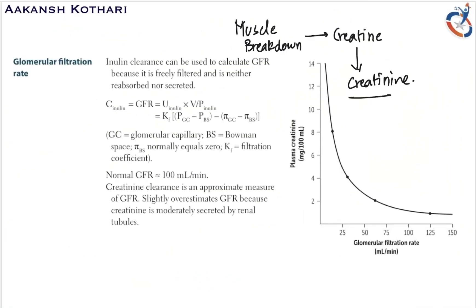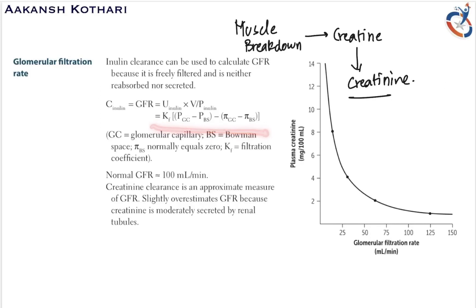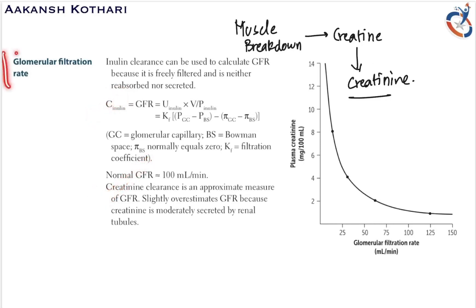The clearance of inulin or creatinine equals GFR, which is also calculated from the net filtration pressure multiplied by the filtration coefficient. This is a theoretical equation not practically used much. The creatinine clearance equation is the high-yield, clinically used method for measuring glomerular filtration rate.